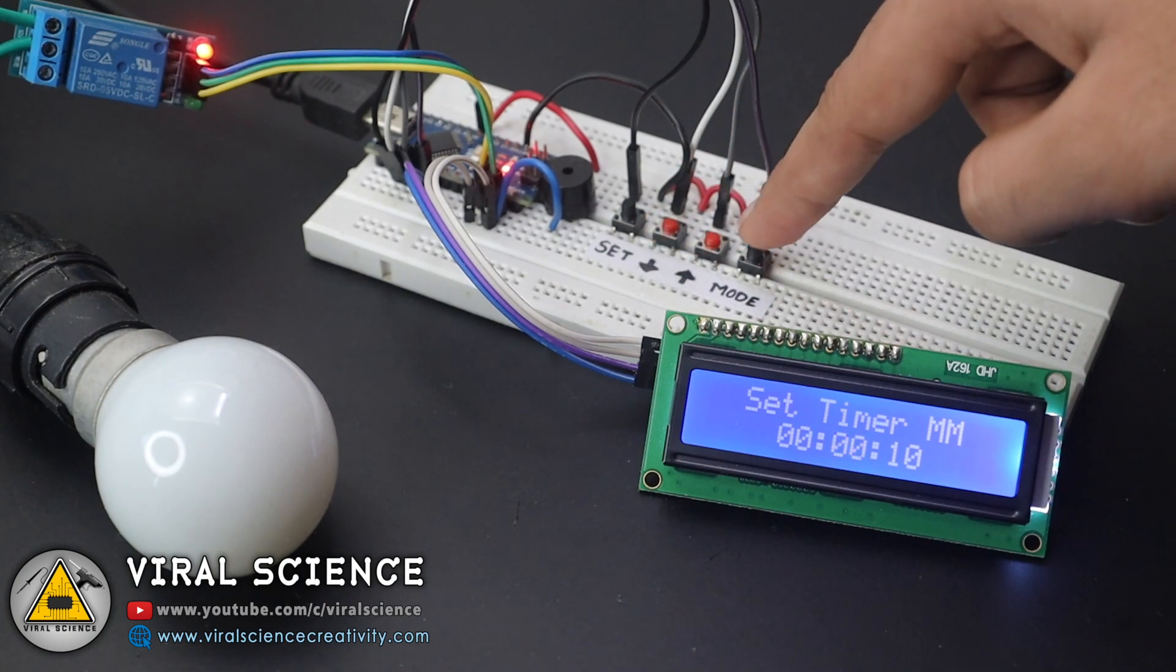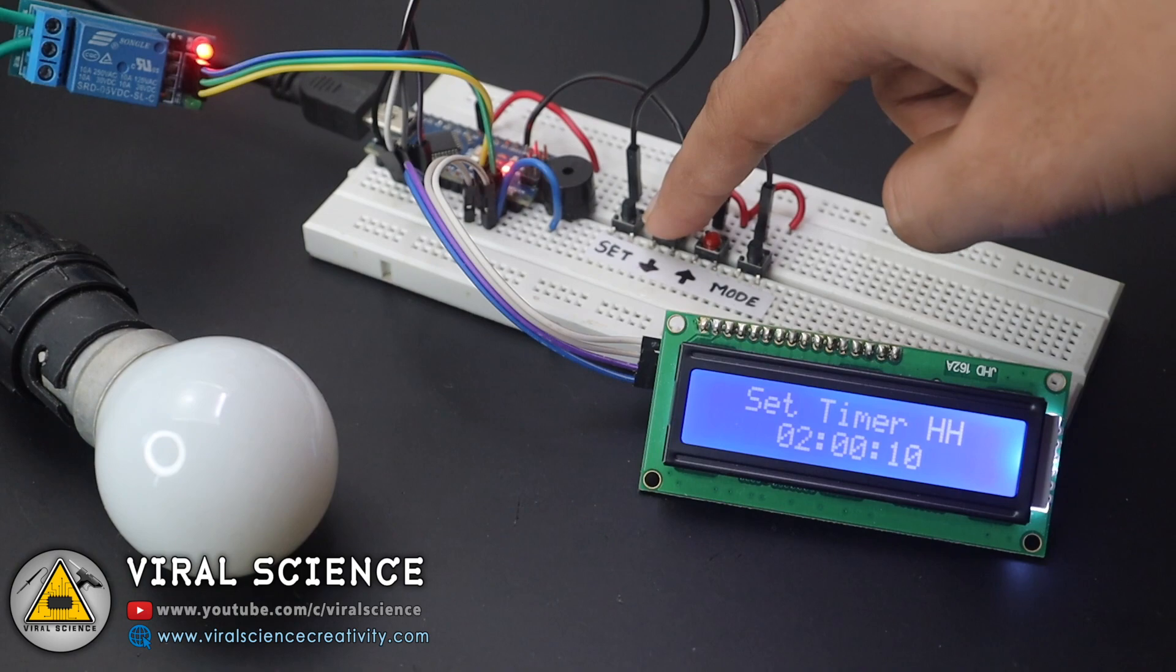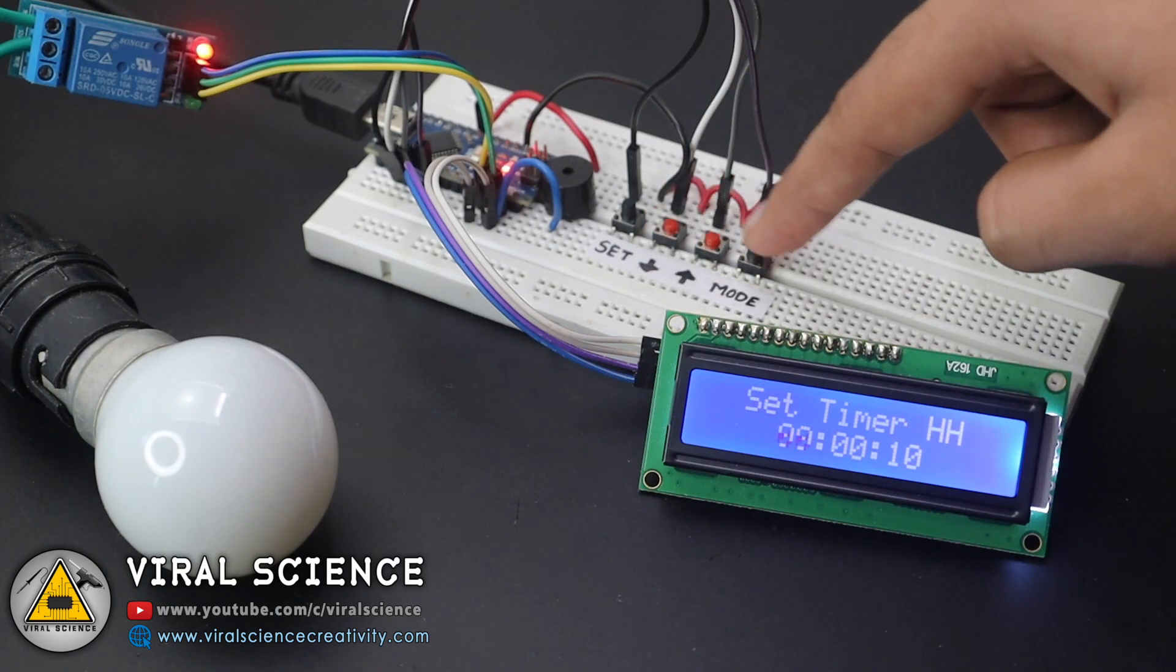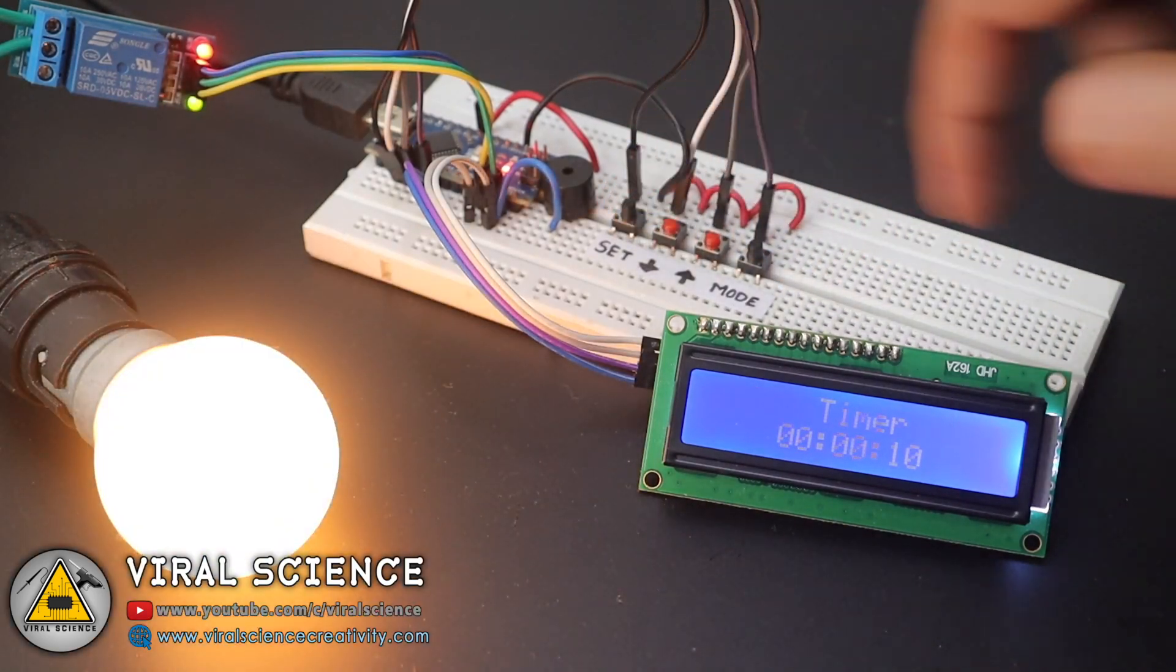All this is stored in the EEPROM memory of the Arduino, so if the power cuts off the settings are stored and you can just press the set button and this thing will start working.